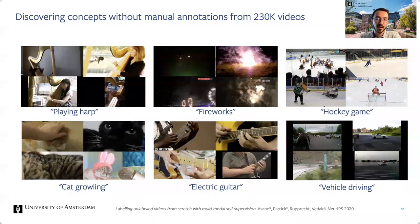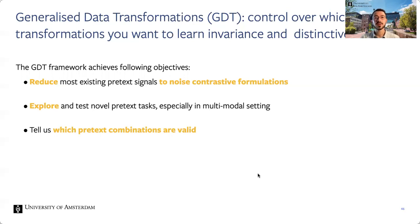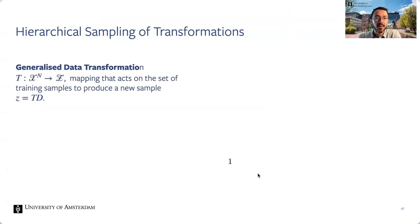Next we're going to talk about a very generic framework for multi-modal contrastive learning which you might know as GDT — Generalized Data Transformations. GDT gives you control over which transformations you want to learn invariance and distinctiveness against. This framework allows you to reduce most existing pretext tasks to noise-contrastive formulations, to explore and test novel pretext tasks especially in the multi-modal setting, and it gives you rules on how to combine these pretext task combinations.